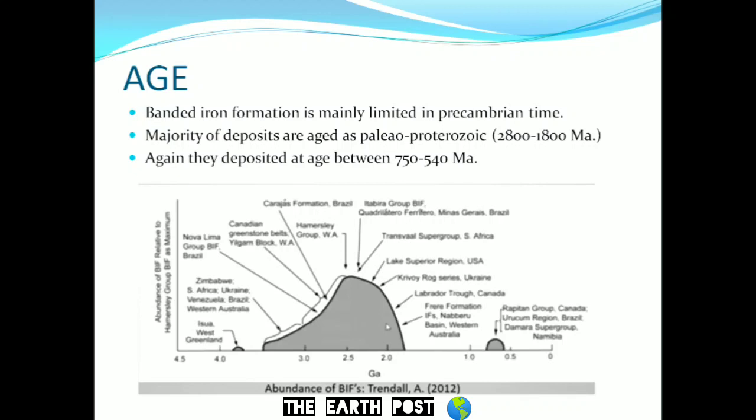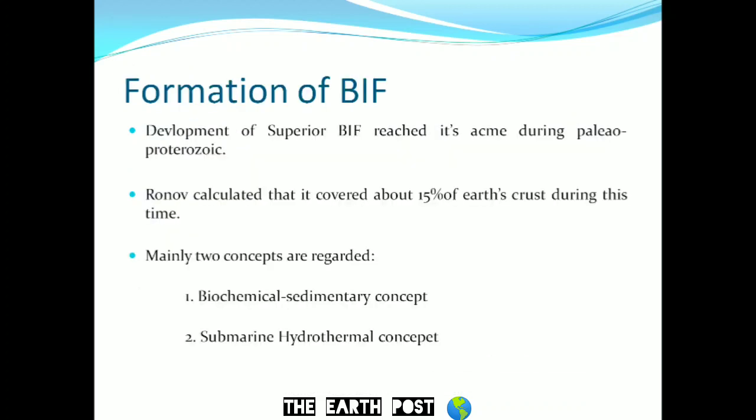This diagram shows the age distribution of banded iron formation, which shows that during the Paleoproterozoic the formation reached its acme, then there was a depositional gap, and again during the Paleoproterozoic they deposited. It is noted that the development of superior BIF reached its acme during the Paleoproterozoic, and it is calculated that it covered about 15% of the Earth's crust during this time.